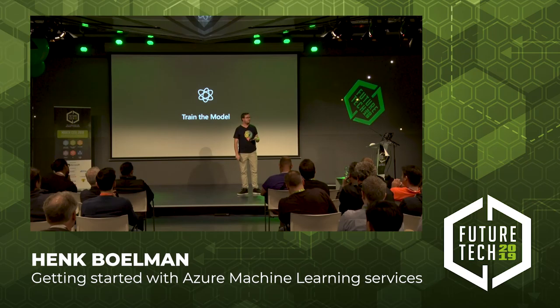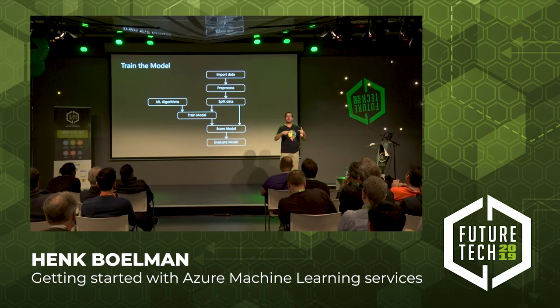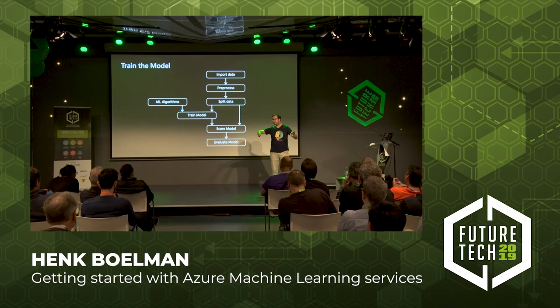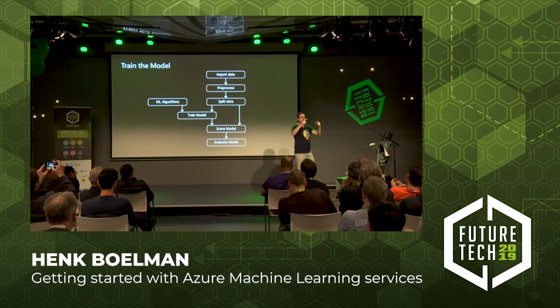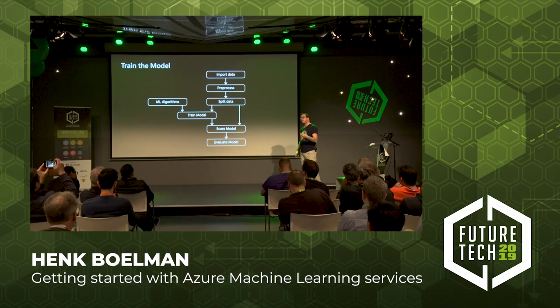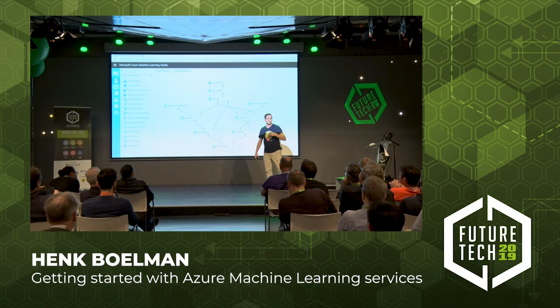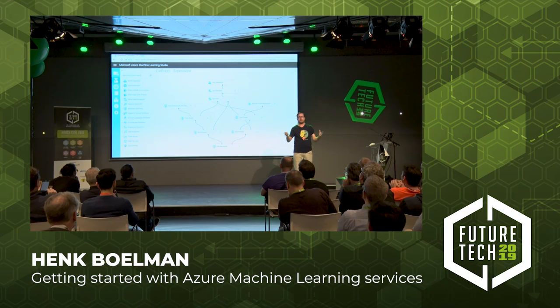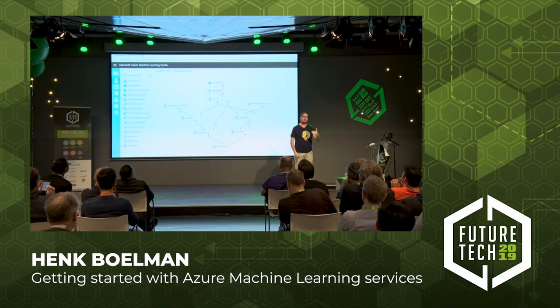When you've chosen your algorithms, you can start training your model. The basic process is: import data, do some pre-processing, split the data — like 80% for training and 20% for testing — train it, score it against your test set, and then evaluate how it performs. In Azure Machine Learning Studio, it looks like this: left and right you see two different algorithms running, results are gathered, and a score tells you which one performs best on the test set.